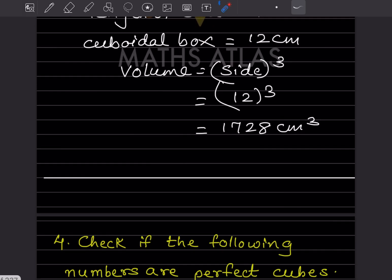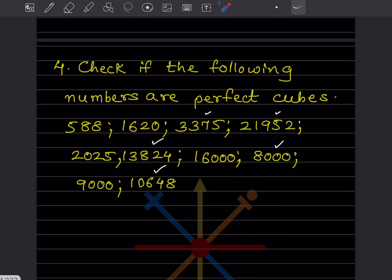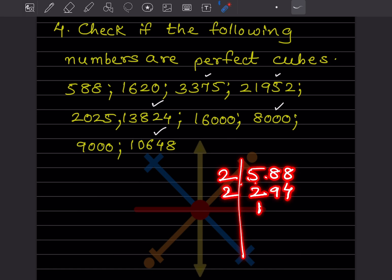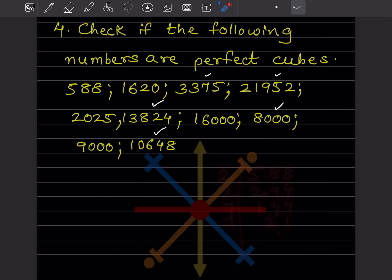Now check if the following numbers are perfect cubes. To check, we use prime factorization. For 588: divide by 2, then keep dividing. We get factors including 2s and then going to 7s.